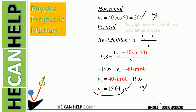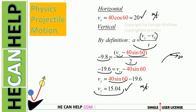Let's review what we did. Acceleration along the vertical equals the final vertical component minus the initial vertical component of velocity, divided by time. The initial vertical component is 40 sine 60; the final vertical component is unknown; acceleration is negative 9.8; time is 2 seconds. Substituting and cross multiplying gives vy equal to 15.04 meters per second. The projectile is still on its way up. The x component of velocity is 20 meters per second.